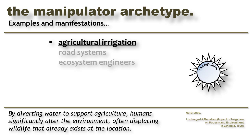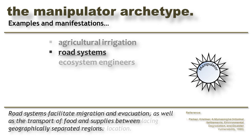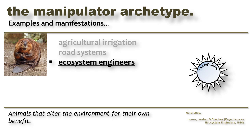Examples of Manipulator behavior include agricultural irrigation, where water is diverted from other sources to support agriculture and settlements — notably, such environmental changes often have a profound and sometimes negative impact on other species. Road systems are another example of Manipulator behavior; these artificial paths facilitate human migration and evacuation, and provide a logistical route for delivering food and supplies to geographically separate areas. Finally, ecosystem engineers are another example of Manipulators — these are animals, like the American beaver, that alter the environment for their own benefit.